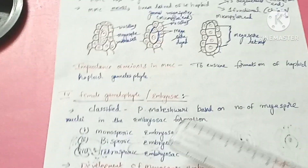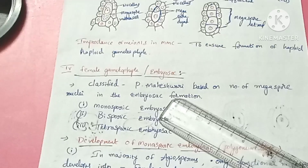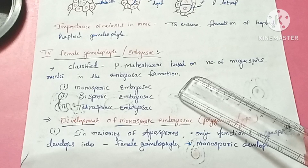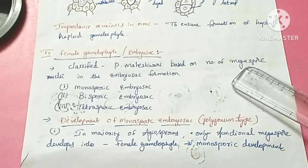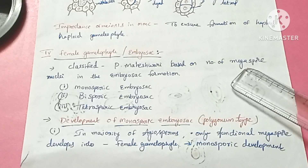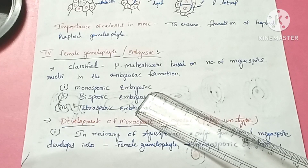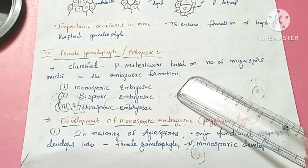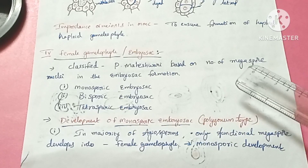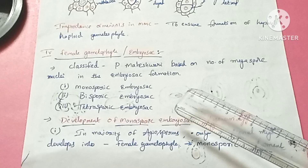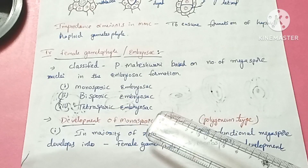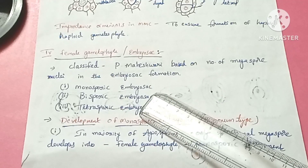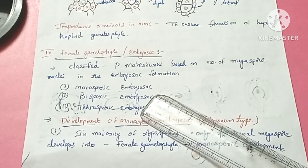The next concept is the female gametophyte, or embryo sac. P. Maheshwari classified these gametophytes based on the number of megaspore nuclei participating in the embryo sac formation.